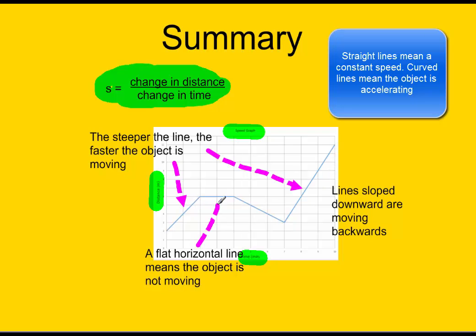A flat or horizontal line is going to mean that the object is not moving at all. It's standing still. Its position is staying the same. Lines that are sloped downwards, like right here, are moving backwards.